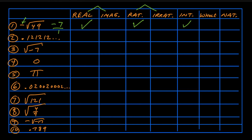For number two, we've got a repeating decimal: 0.121212... When it's repeating like that, we know we can write it as a ratio of an integer over an integer — in this case, 12 divided by 99 — which means it's rational. And if it's rational, we know it's real. It's not imaginary because it's not the square root of a negative number. It's not irrational because it's one or the other. But it's not an integer — it's not a round positive, negative, or zero number — so it's not whole and it's not natural. Just two categories: real and rational.